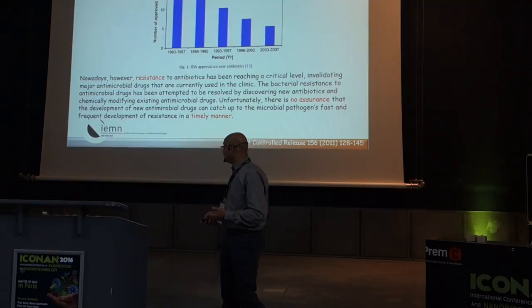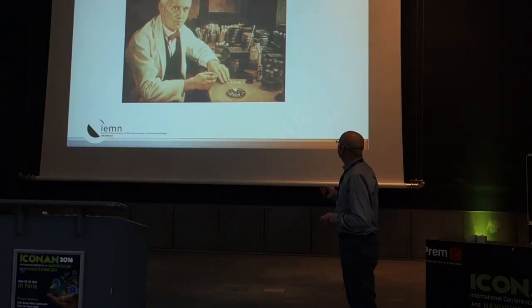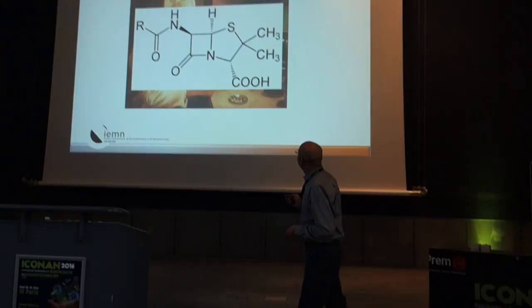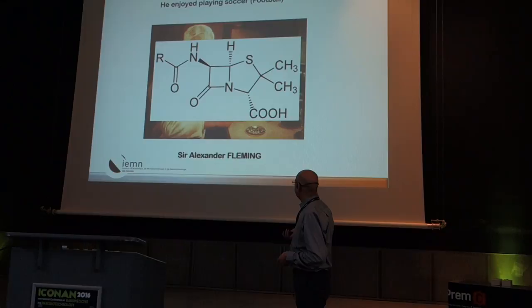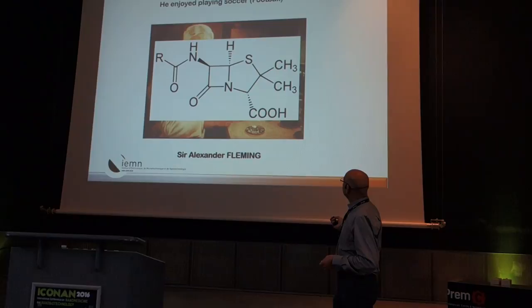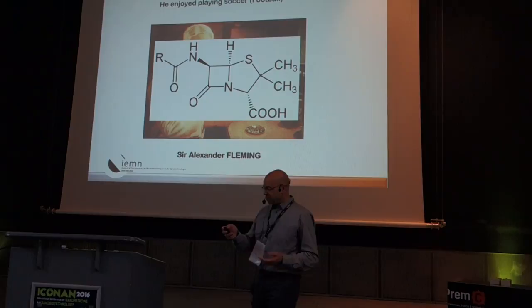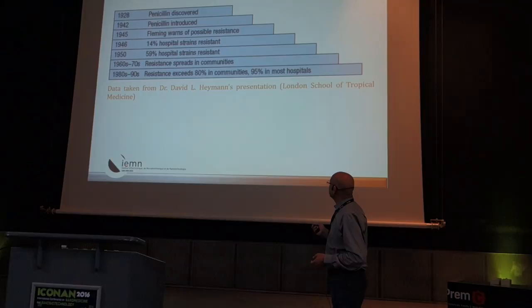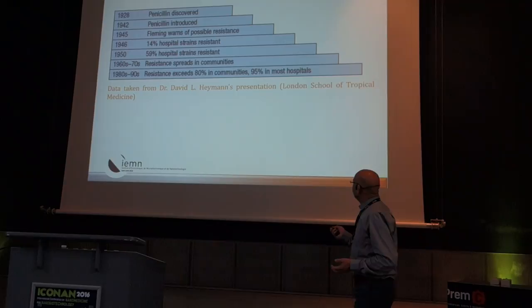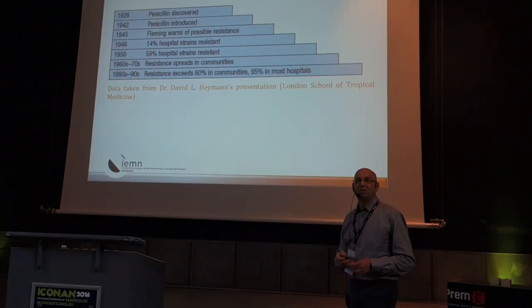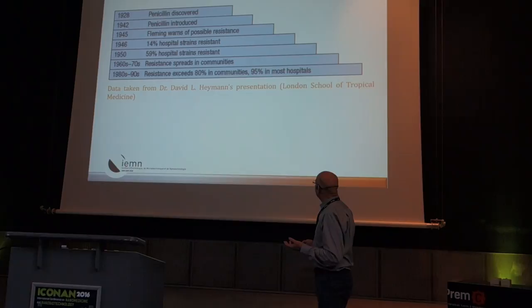A little bit of history. Antibiotics came from this man — Sir Alexander Fleming. He was born in Scotland and was a Nobel Prize winner in physiology in 1945. The first antibiotic was introduced in 1942, but only three years later there was already talk of possible resistance. That's not very far after just being on the market. And when you look afterwards, it's almost 90% in most hospitals, so it's already very bad.